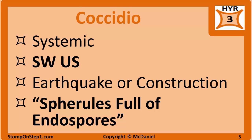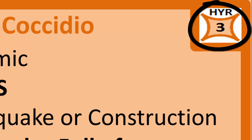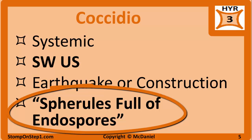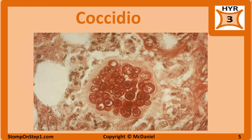Coccidioidomycosis is one of the systemic mycoses, with a high yield rating of 3. Coccidio tends to be found in the southwestern part of the US. Question stems may also mention a recent earthquake or an occupation such as construction, which can help spread spores from the soil into the air. It appears as a spherule full of endospores on histologic examination. The larger spherule contains smaller endospores inside it, and eventually the spherule will rupture, releasing the smaller endospores.